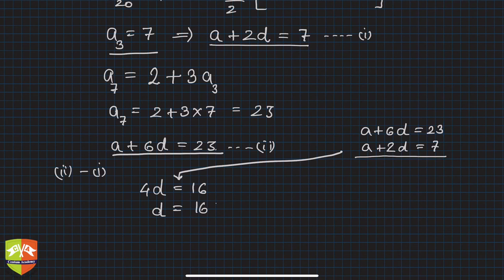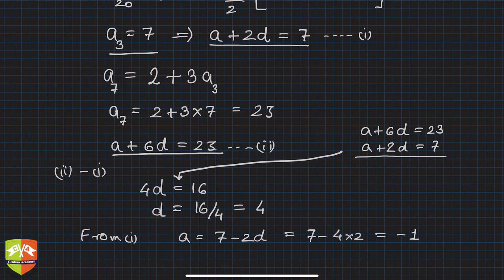Clearly d comes out to be 16 upon 4, which is 4. d is known; now we have to just find out a. So from equation 1, we can find a. From 1, a equals 7 minus 2d, and this is 7 minus 4 times 2, so minus 1. So we got a as well.